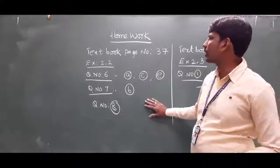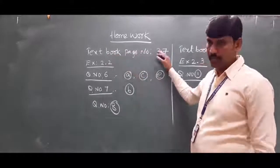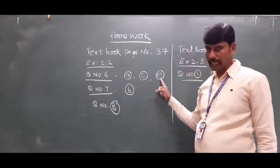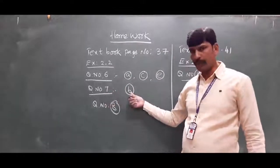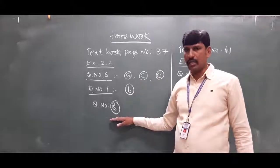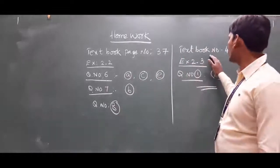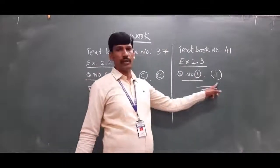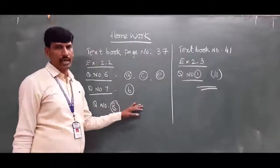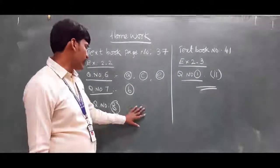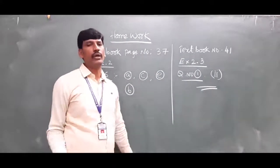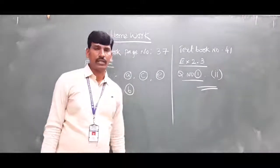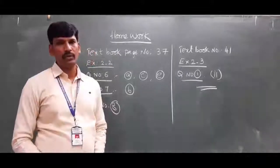Here is your homework: textbook page number 37, Exercise 2.2 — question number 6 parts A, C, E (3 questions), question number 7 part B, and question number 8; also textbook page number 41, Exercise 2.3 question number 1, second page. Complete this homework in your classwork. I hope you understood today's concept. If you have any doubts you can call me or WhatsApp me and we will discuss, or in a virtual class we will discuss. Thank you very much.